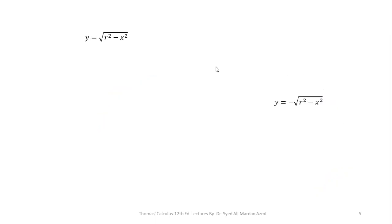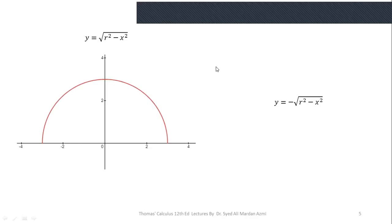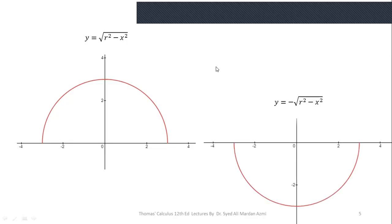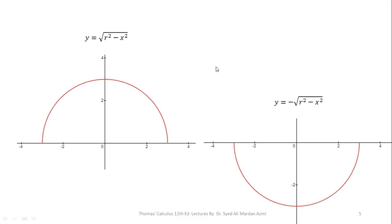Similarly, y = √(r² − x²) gives the part of the circle where y is positive — in the upper half-plane or first and second quadrants. y = −√(r² − x²) gives the part of the circle where y is negative — in the lower half-plane or third and fourth quadrants.